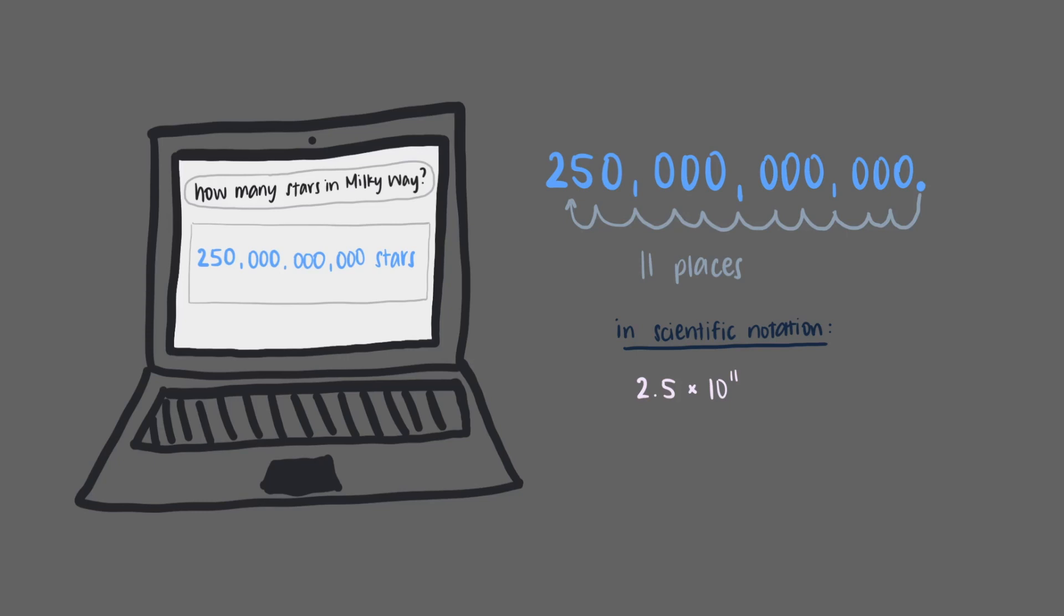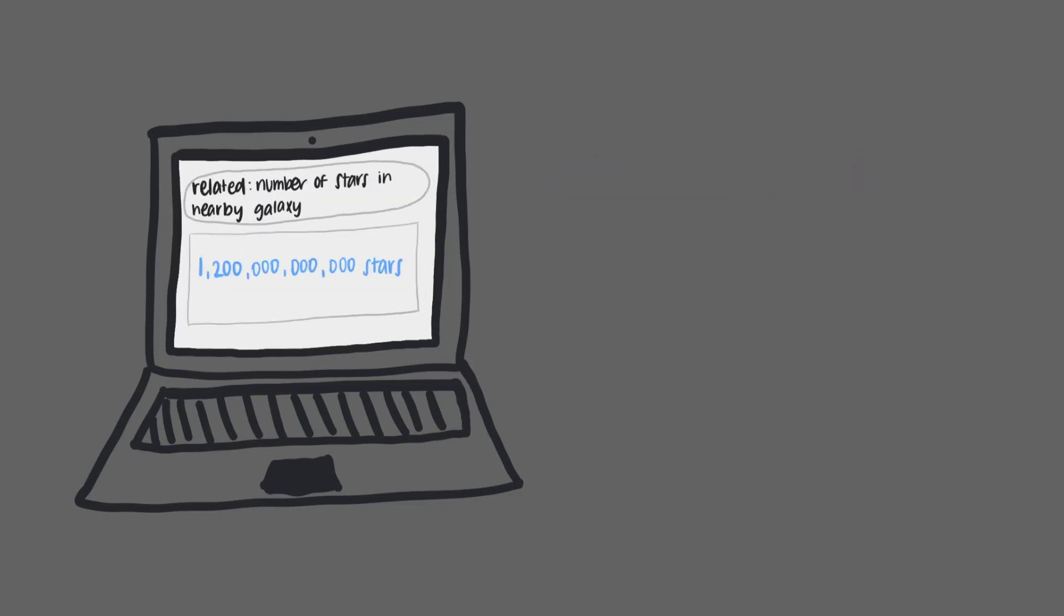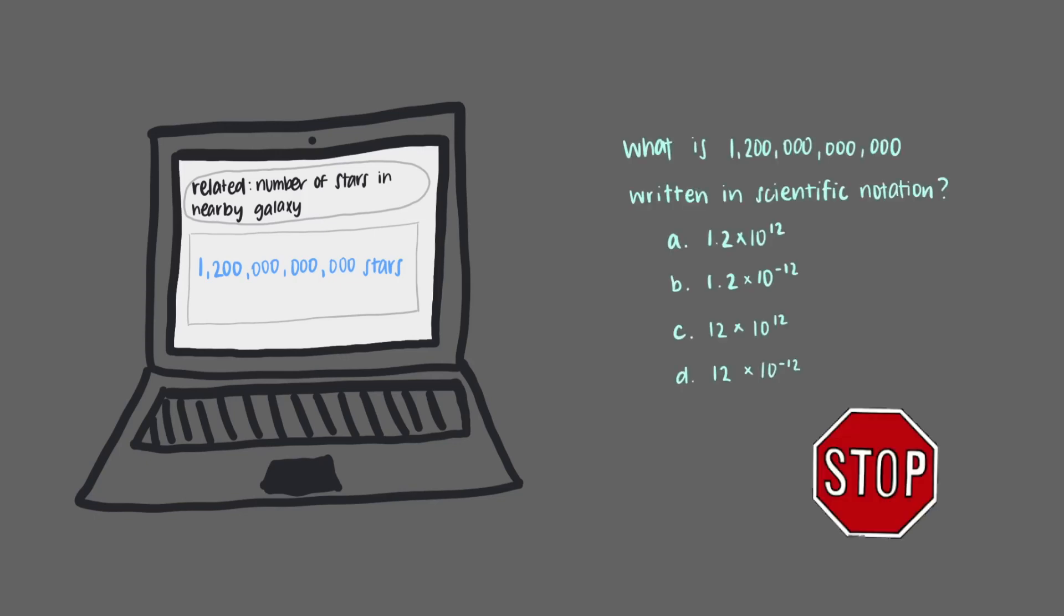While researching how many stars were in our galaxy, you find that there are 1.2 trillion stars in another known galaxy. What is this number written in scientific notation?